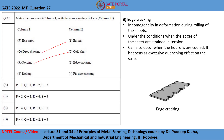The third one is edge cracking. Edge cracking is a rolling defect which is an inhomogeneity in deformation during rolling of sheets. It occurs when the edges of the sheets are strained under tension, and these tensile forces at the edges are created when the hot rolls are cooled, also occurring as an excessive quenching effect on the strip.